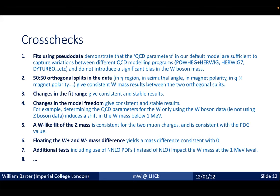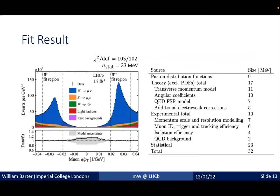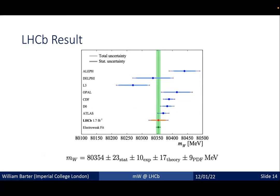We can float the W plus and W minus mass difference and find a mass difference consistent with zero — an important cross-check. Our fit result shows a good chi-squared per degree of freedom with a statistical uncertainty of 23 MeV. The experimental total uncertainty is already controlled at the 10 MeV level, and our theory uncertainty is currently at 17 MeV, with statistical uncertainty still the largest contribution.